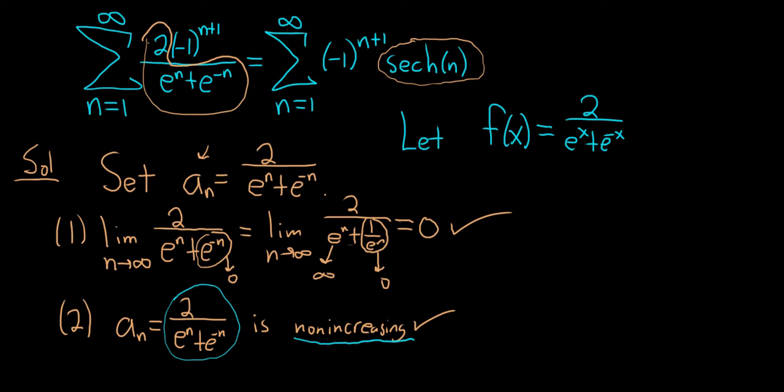By the way, non-increasing means decreasing or staying the same. So take this derivative. What we'll do is we'll bring the bottom piece upstairs like this. So 2 times e to the x plus e to the negative x to the negative 1. And now we're going to take the derivative and use the chain rule.